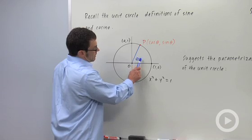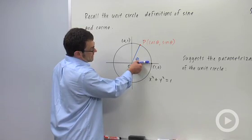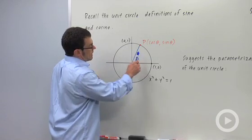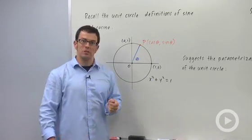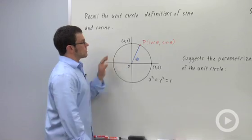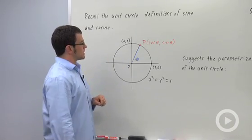Now, if we make theta the angle between the positive x-axis and the terminal side, then the x and y coordinates of this point on the terminal side are going to be your cosine and sine. So those are the unit circle definitions of cosine and sine.